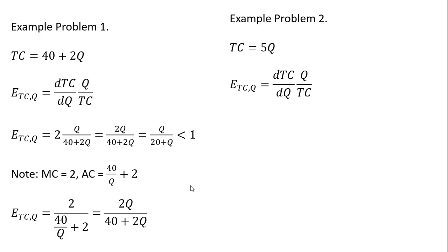Example two, total cost equals 5Q. Marginal cost is 5. Derivative of the total cost equation, we get 5. We have Q, just going to leave that alone. And then for total cost, we're going to plug in 5Q. And this will just simplify very nicely to 1.